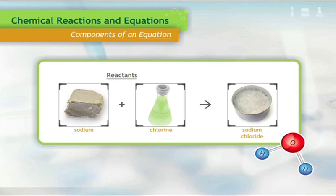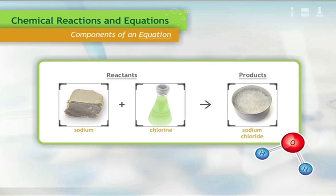Again, the reactants are on the left and the products are on the right. The yield symbol separates the two and indicates the direction of the reaction.